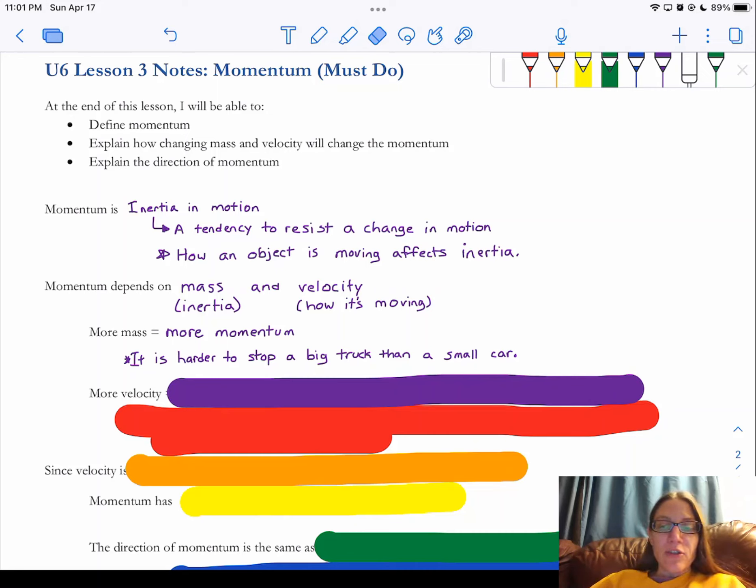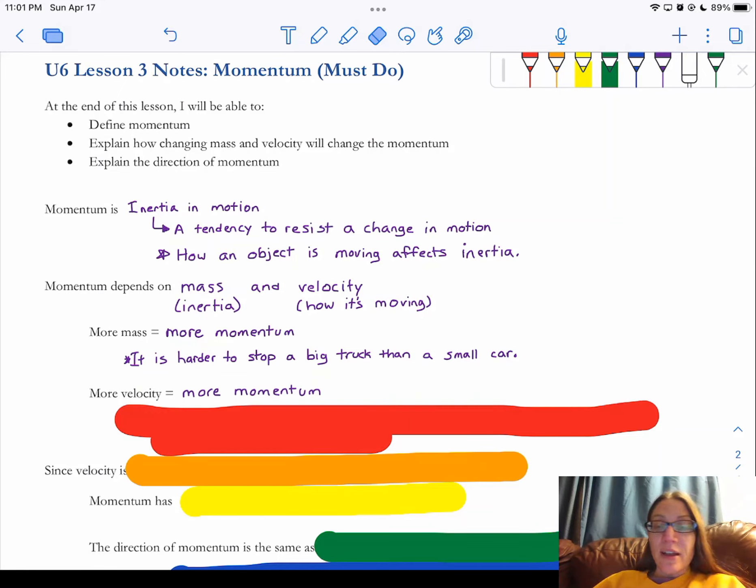The same thing is true with velocity, though. The faster something is going, more velocity means they also have more momentum. This one is a little bit more applicable with a sports team. The faster a sports team is making momentum down that field or across the court, the more momentum they have, the harder it is to stop them. They really get going. You really have to be lucky to kind of stop those guys, right?